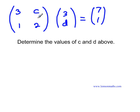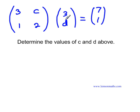On the left-hand side of the matrix equation — because it's an equation, as we can see the equal sign — we have two matrices being multiplied to produce a third matrix, which has entries 7 and 1. The question is: what are the values of C and D such that when we multiply these two matrices, we get 7 and 1 as entries for the result?